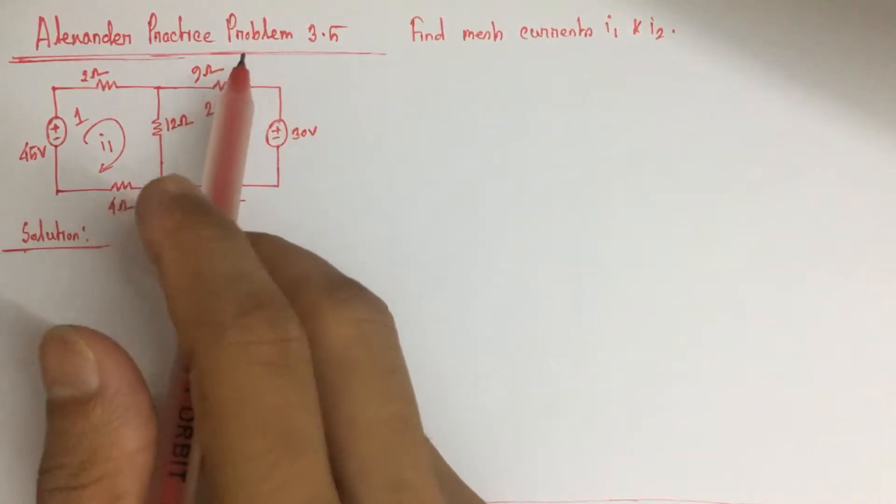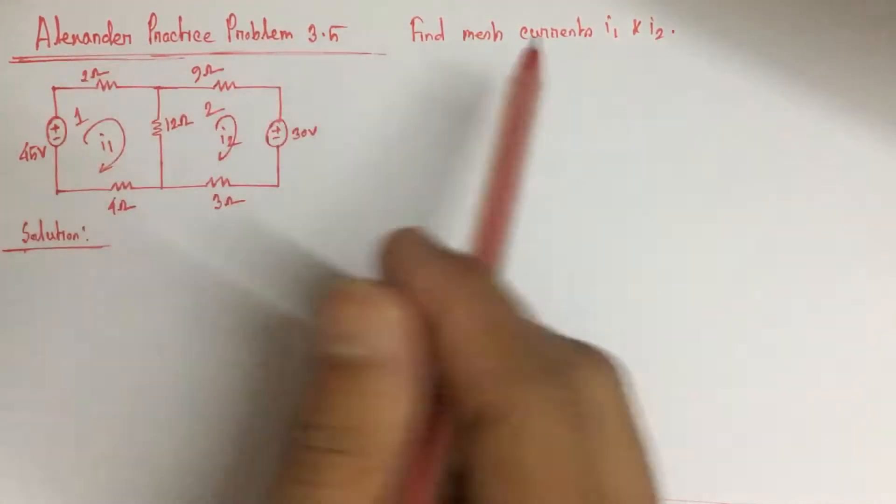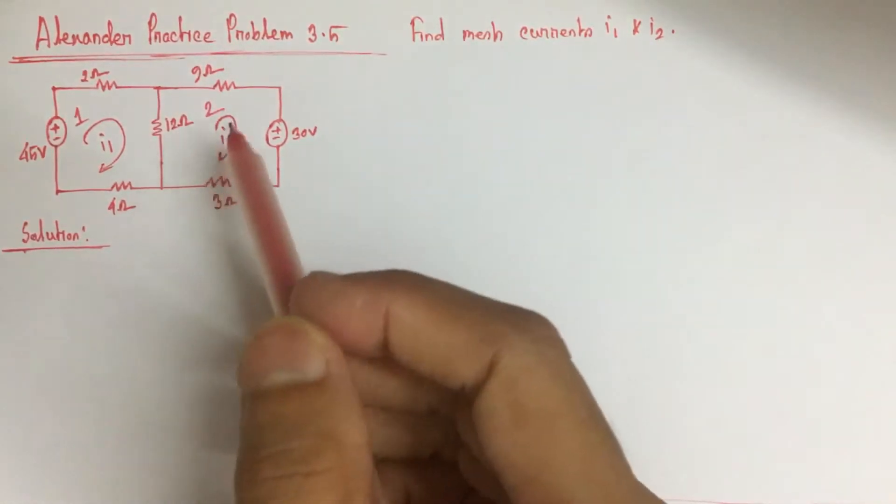Hi viewers, today we will solve practice problem 3.5 from Alexander. Here we have to identify the mesh currents I1 and I2.